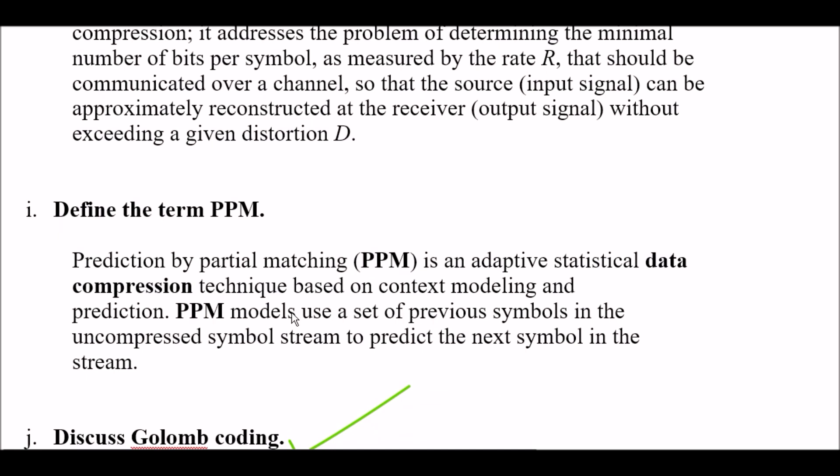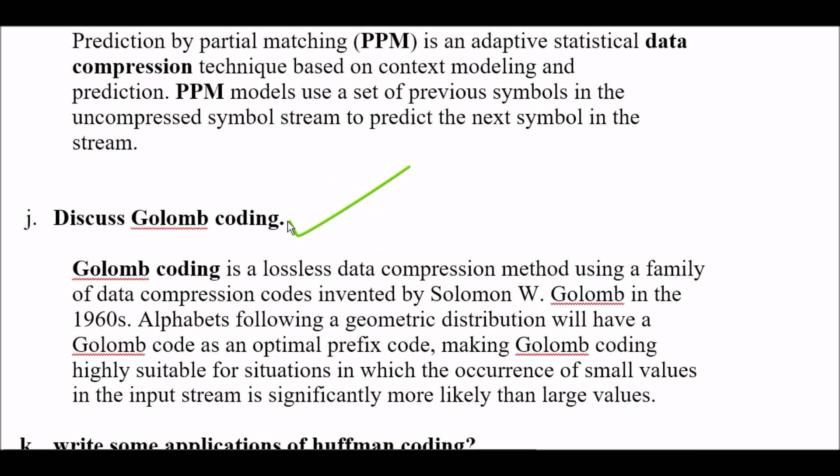Question I: Define the term PPM. This is very important also. PPM stands for prediction by partial matching. It is an adaptive statistical data compression technique based on context modeling and prediction. So guys, PPM is based on context modeling and prediction - focus on it. PPM models use a set of previous symbols in the uncompressed symbol stream to predict the next symbol in the stream.